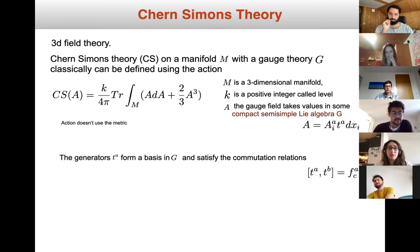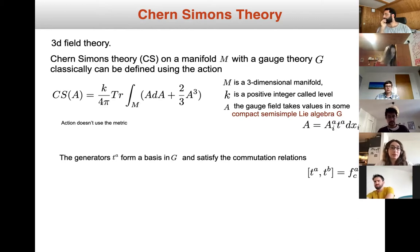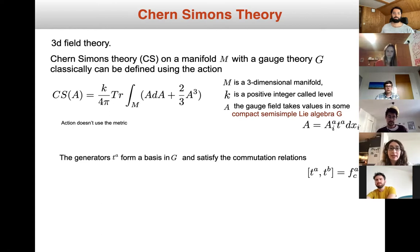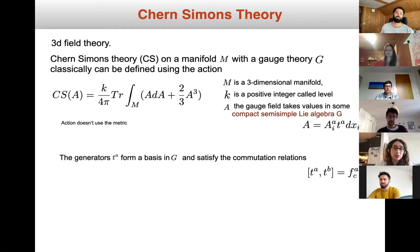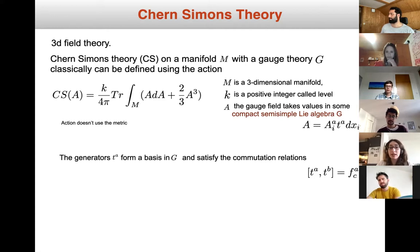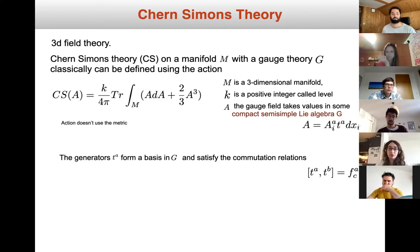Chern-Simons theory is a three-dimensional field theory. Classically, Chern-Simons theory on a manifold M with gauge group G can be defined by the following action. M is a three-dimensional manifold, k is a positive integer parameter called the level, and we have a one-form gauge field A taking values in a compact and semi-simple Lie algebra g, with generators T_a forming a basis satisfying the given commutation relations.